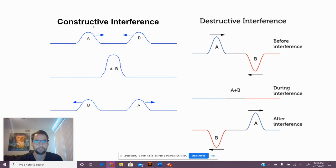On the left, we have constructive interference. We have wave A and B. They're both crests. They're going to collide in the middle and create a taller, higher amplitude sound. And then when they pass each other, they are going to be the same as they were before the collision.